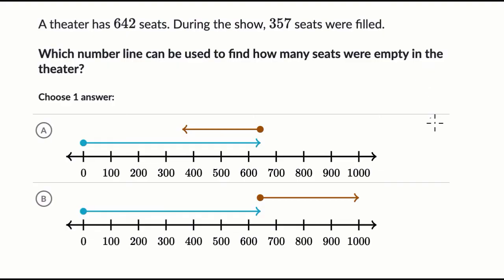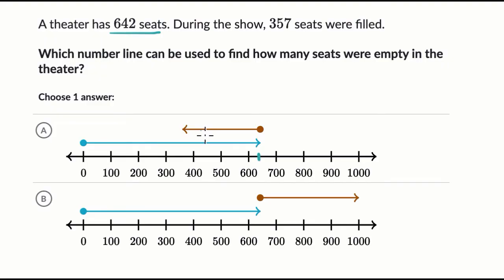Pause this video and try this on your own before we do this together. So this first one, choice A — in blue, it looks like we're starting with 642 seats right over here. And then it looks like it's subtracting some amount to get to 357.